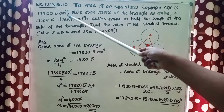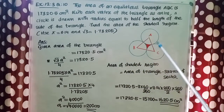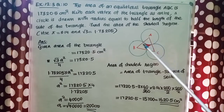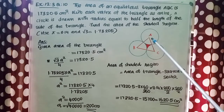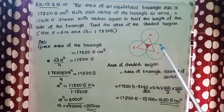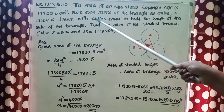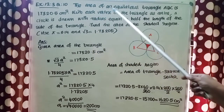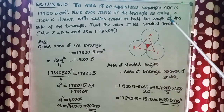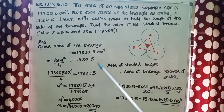The area of the triangle is given in the question. We need to find out the area of these sectors. The formula for area of a sector is theta by 360 into pi r squared. The radius is not given directly — it is equal to half the length of the side. So first we need to find out the length of the side of the triangle.